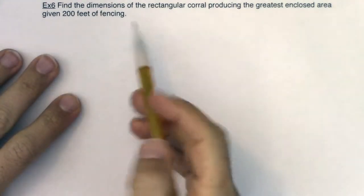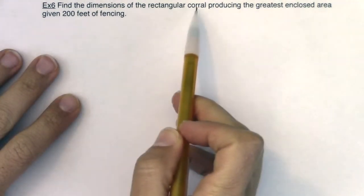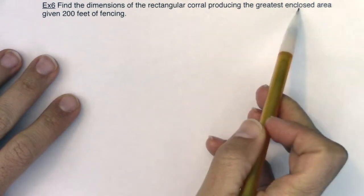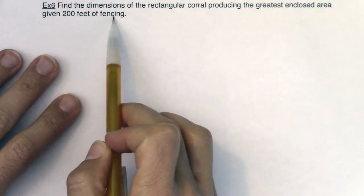Hey Math 31, welcome back for another word problem. I'm going to read through this and try to discern how many variables I'm dealing with. It says, find the dimensions of a rectangular corral producing the greatest enclosed area given 200 feet of fencing.